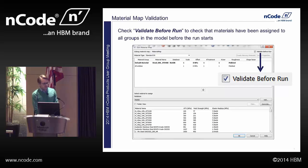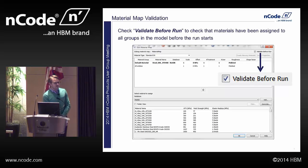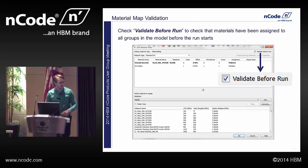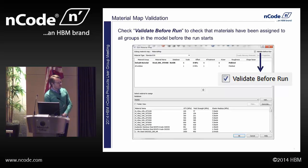Along the same lines is 'validate material mapping,' which runs through and makes sure that you have a material assigned to all of your elements. If you have multiple material groups and you've assigned only some of them, it will check before the run and warn you right up front that you've forgotten to assign something — rather than finding out 45 hours into a run on a large model. Note that this is not active by default, so you'll want to enable it.